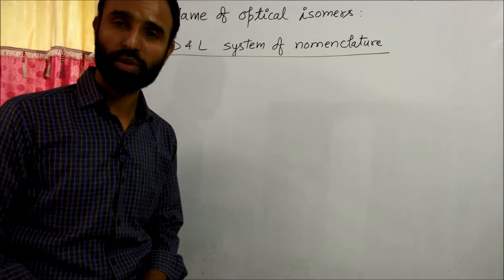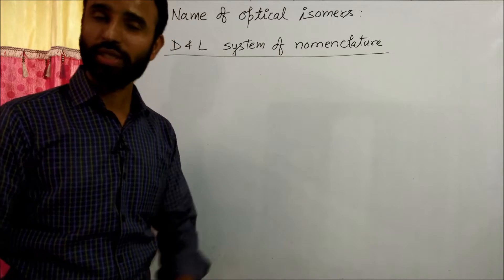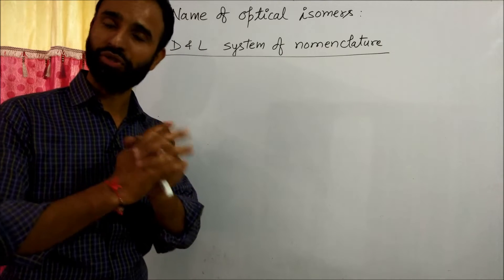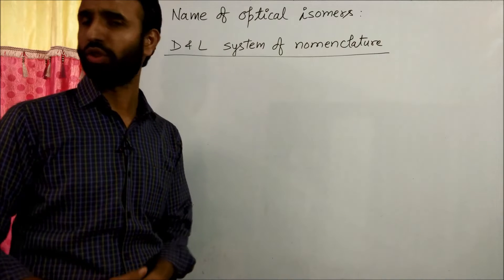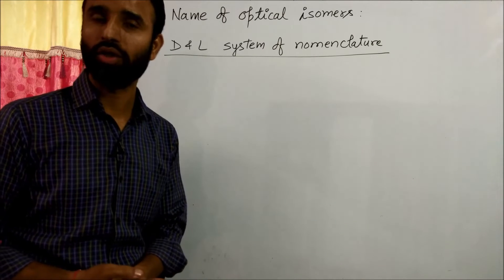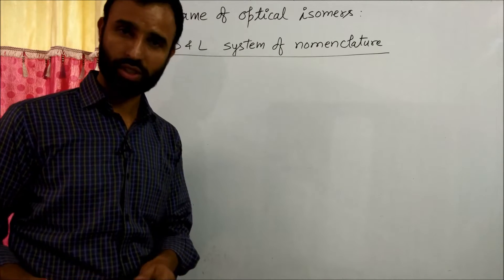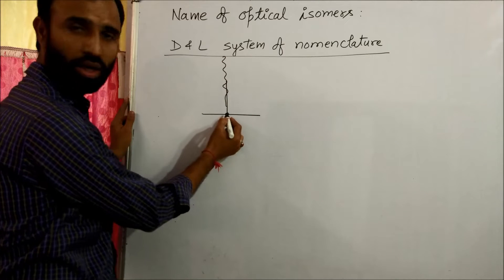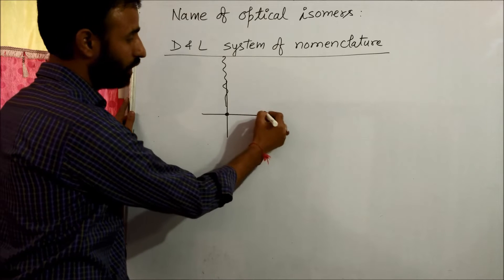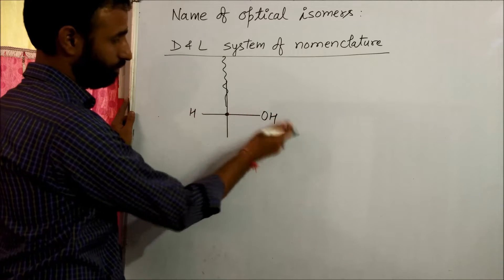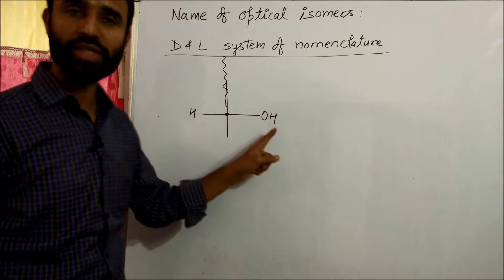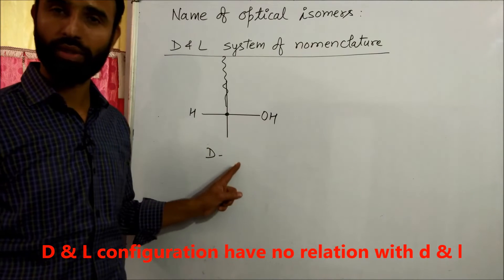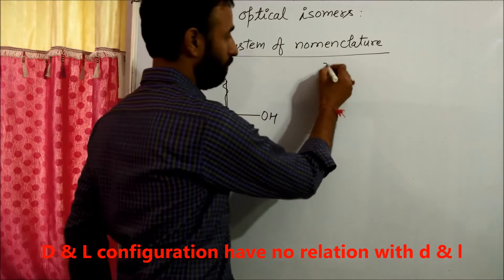The D and L system of nomenclature was given by Emil Fischer, basically for sugars. It can also be applied to alpha amino acids. For sugars, on the last carbon — whatever the structure may be — if OH is on the right side, that is called the D form of the enantiomer.